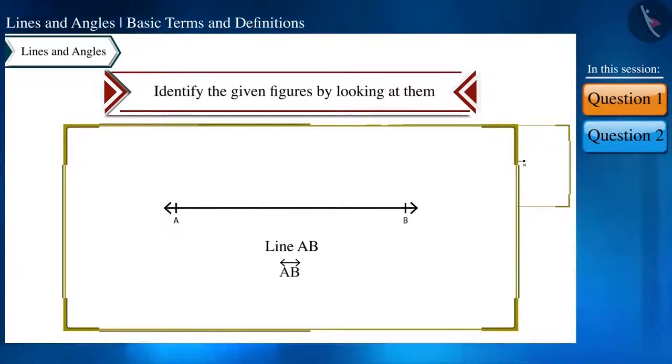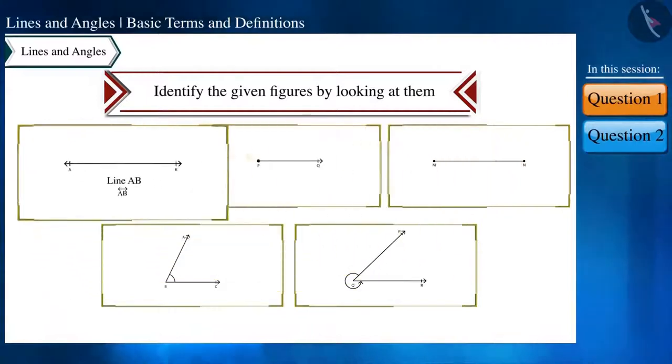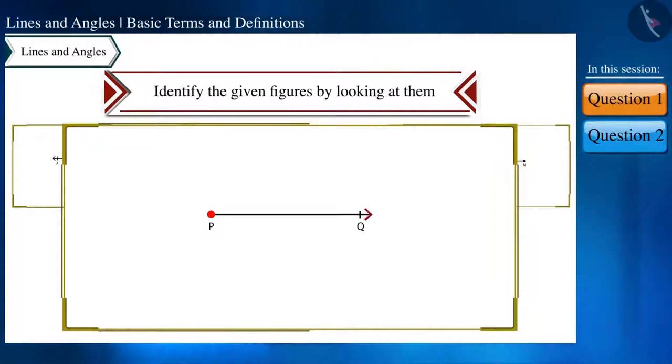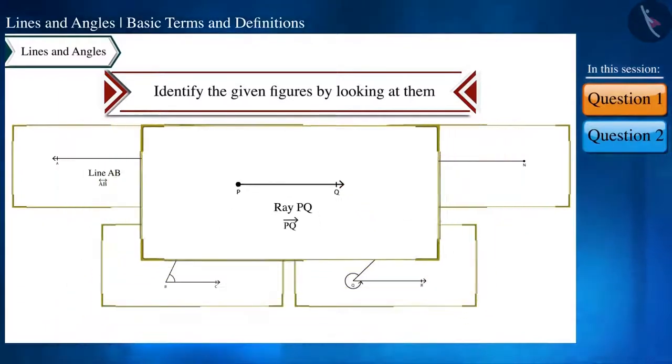Line AB and we represent it like this. Look at the second figure. Here on one end is a point and on the other end there is a symbol of an arrow. That is, it can be extended further in only one direction. So, this is a ray PQ and we represent it like this.